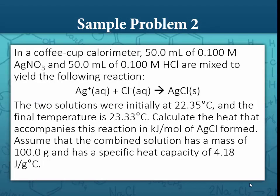Sample problem two: In a coffee cup calorimeter, 50 mL of 0.100 M silver nitrate and 50 mL of 0.100 M hydrochloric acid are mixed. The net ionic equation shows silver ion reacting with chloride ion to form solid silver chloride. The two solutions were initially at 22.35°C and the final temperature is 23.33°C. The temperature increased, so the reaction gave off energy — the heat of reaction will be negative. We need to find the enthalpy in kJ/mol of silver chloride formed.